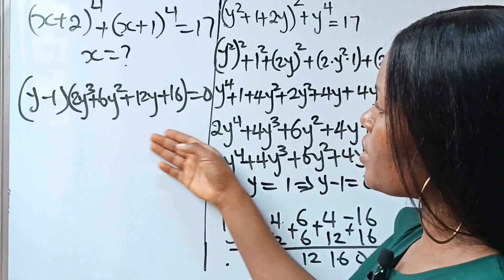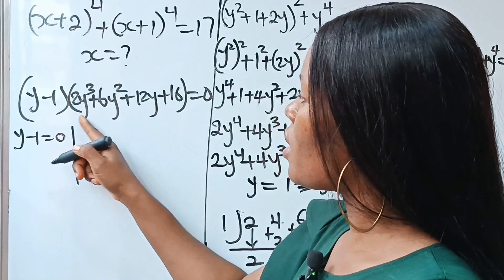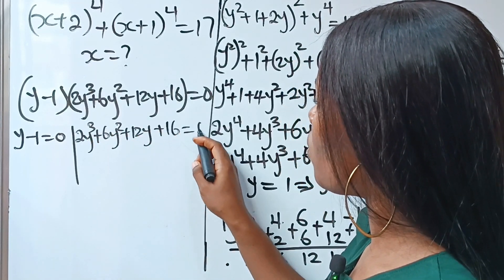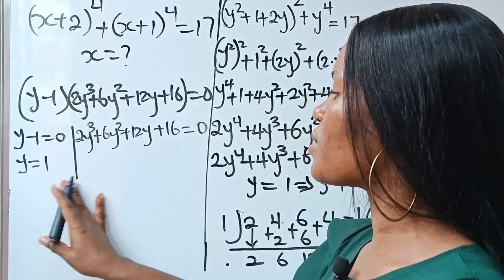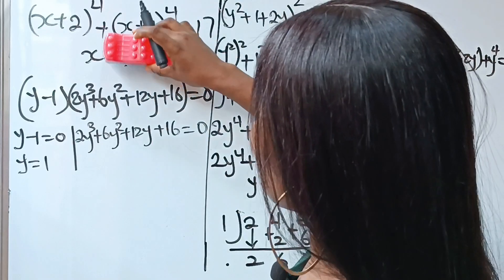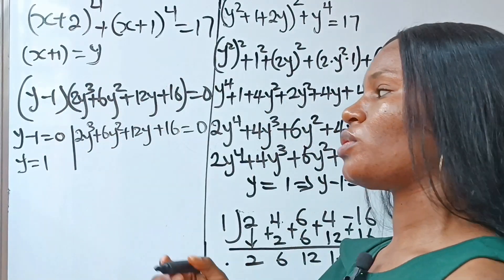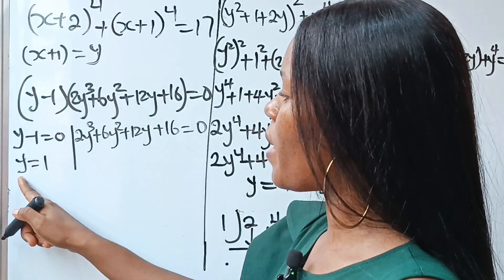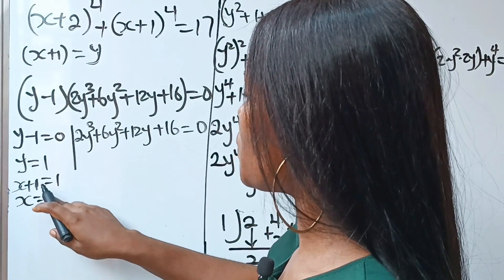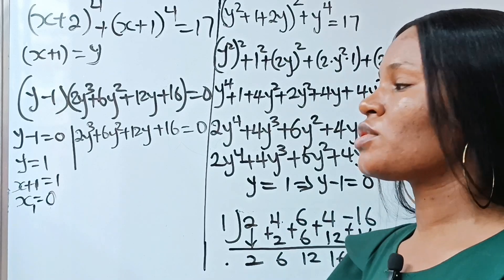We now have two equations: y minus 1 equals zero, and 2y^3 plus 6y^2 plus 12y plus 16 equals zero. From the first, y equals 1. Recalling that y equals x plus 1, substituting gives x plus 1 equals 1, so x equals zero. This is our first value of x.